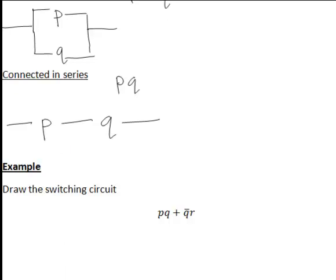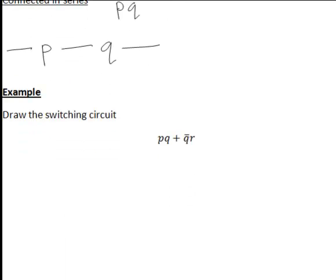The first one here is written in the form PQ plus Q bar R, where note that Q bar is the negation of Q or not Q. So that is a switch that is open when Q is closed and closed when Q is open. But anyway, to draw a diagram of this switching circuit, we can go through step by step.